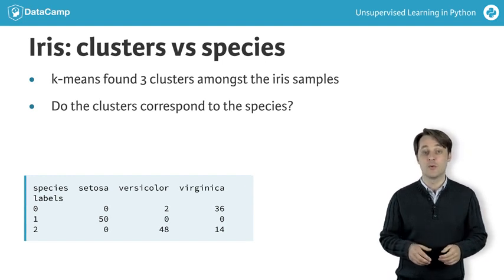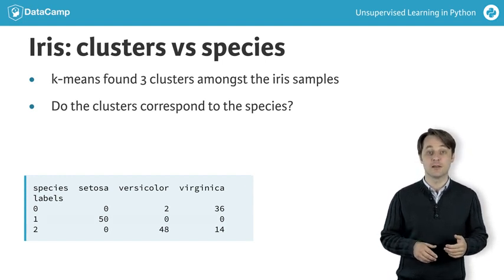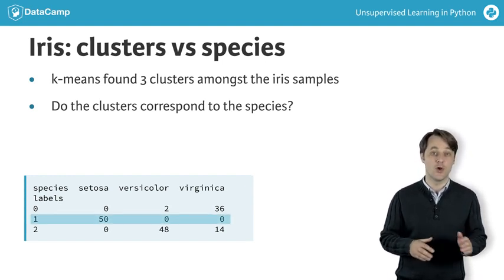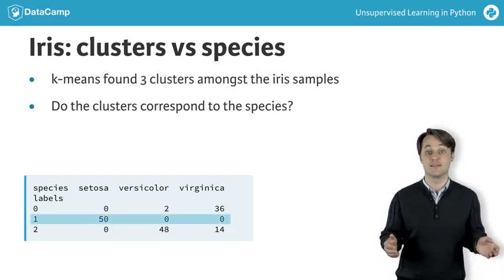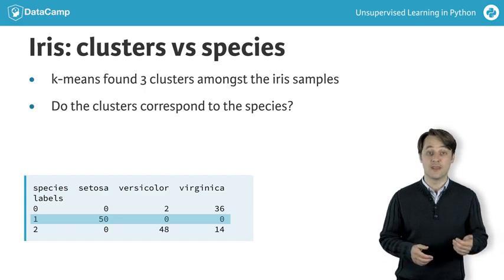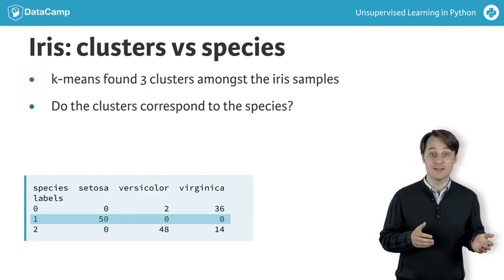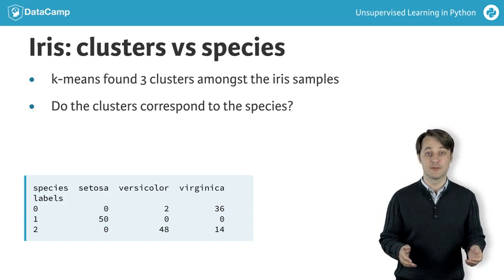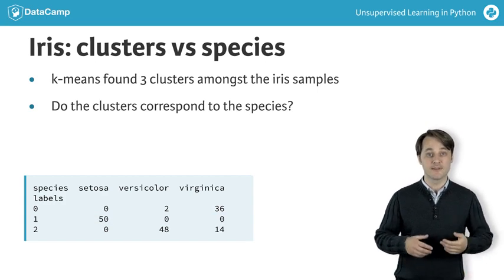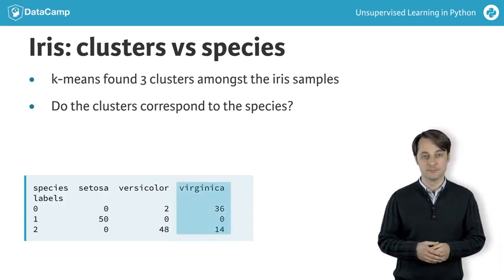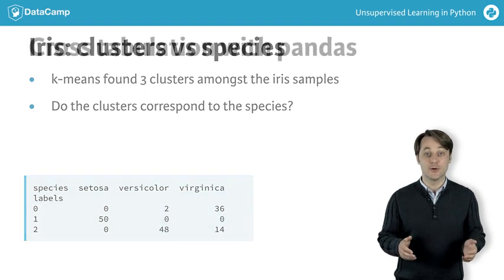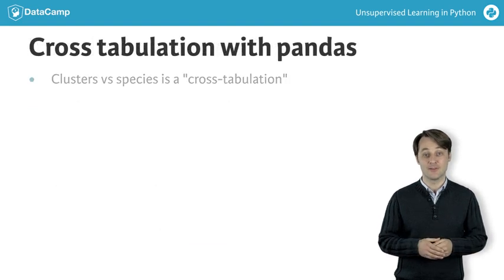For example, we see that cluster 1 corresponds perfectly with the species Setosa. On the other hand, while cluster 0 contains mainly Virginica samples, there are also some Virginica samples in cluster 2. Tables like these are called cross-tabulations.